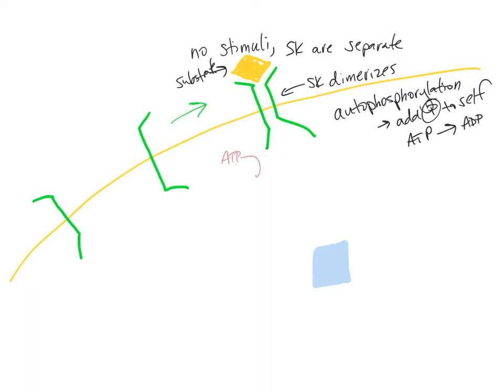So when ATP is used, it becomes an ADP, and now our tail has a phosphate group added, and this occurs on each side of our dimerized sensor kinase.